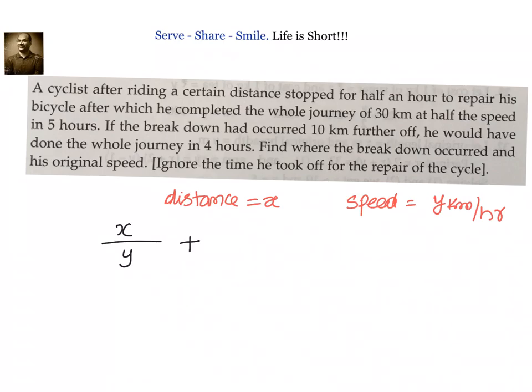After that, the breakdown happened. Total distance traveled is 30 kilometers, so the remaining distance to be covered is 30 minus x kilometers. And after the repair, the speed got reduced, so he was able to go only with half of the speed. That means now the speed became y by 2 and he was able to finish the whole journey in 5 hours. This is our first equation.